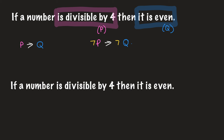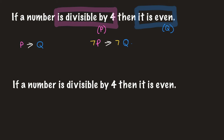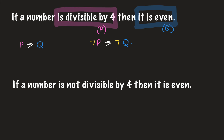We're going to copy the statement across. If a number is not divisible by four, then it is not even. We add the negation for P and Q — coloring it in yellow to connect with the negation above. Now let's think about cases that fit this. Take 31: is 31 divisible by four? No, it is not. And is it even? No, it's odd. So that one works for that statement.